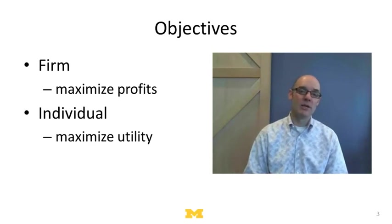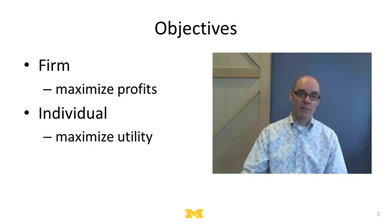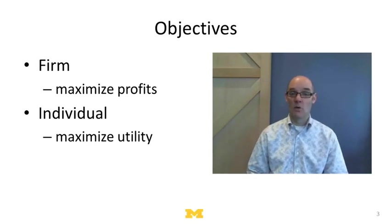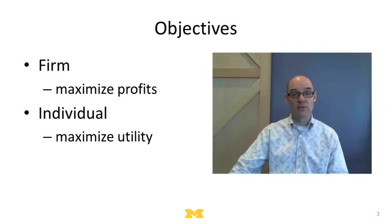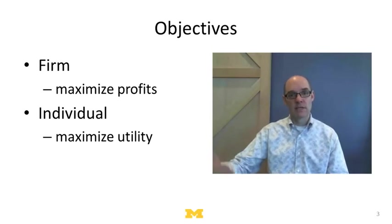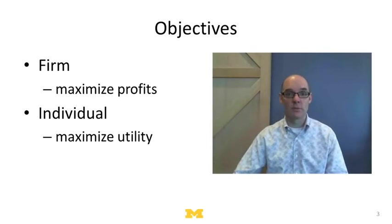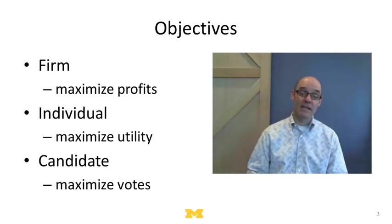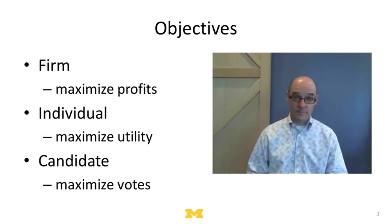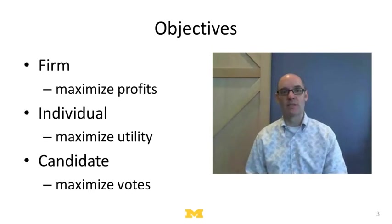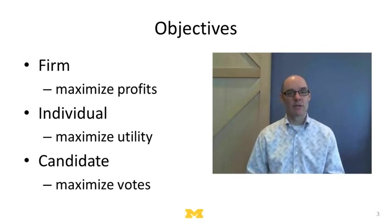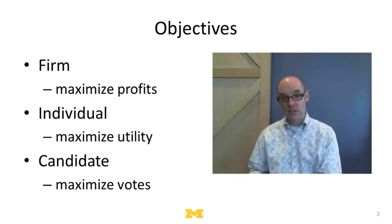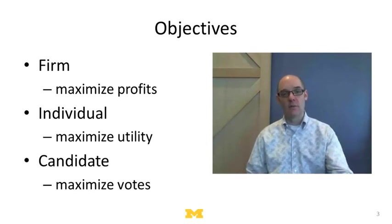If you're a person, you might care about maximizing your own utility — making yourself as happy as possible. Or if you're altruistic, you might care not only about yourself but about other people. The presumption, though, is that whatever your objective is, you make optimal choices to satisfy it. If you're a political candidate, you might care about getting as many votes as possible — that's your objective function. The rational actor model assumes you take the action that gets you as many votes as possible.